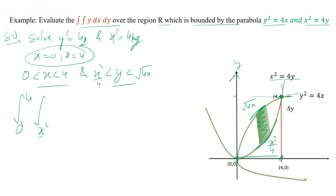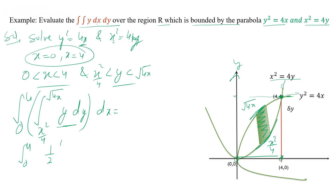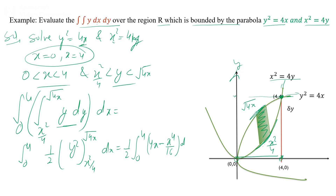Setting up the integration with limits 0 to 4 for x, and x squared by 4 to root 4x for y, with integrand y. First we take the integration with respect to y, then x. After integrating with respect to y, we get (1/2) times the integral from 0 to 4 of [4x minus x to the power 4 by 16] dx.